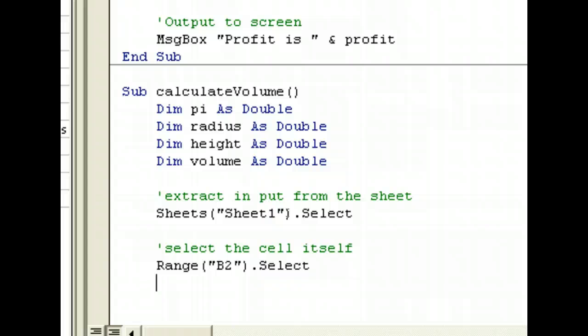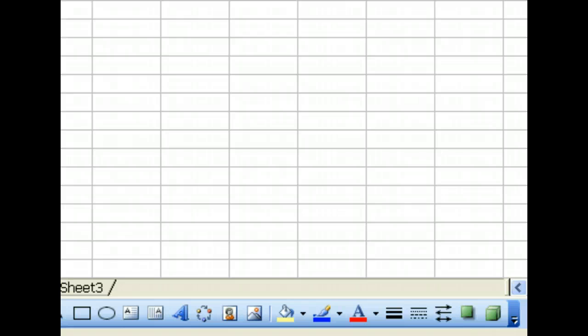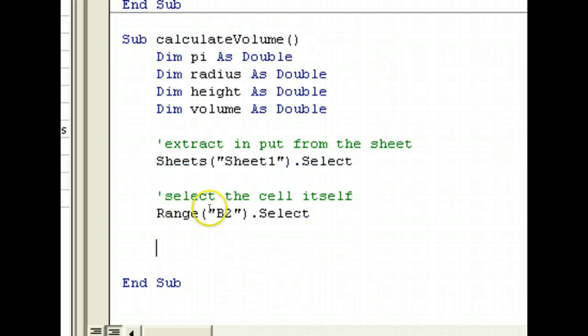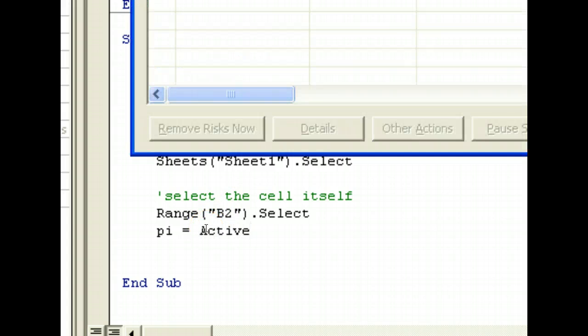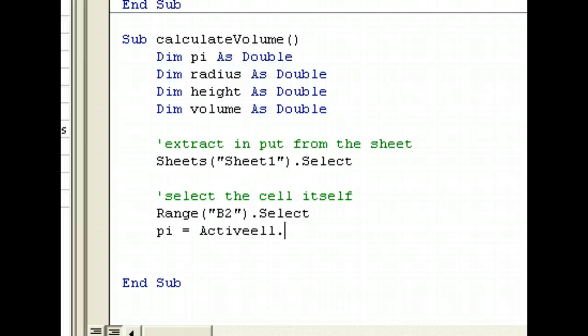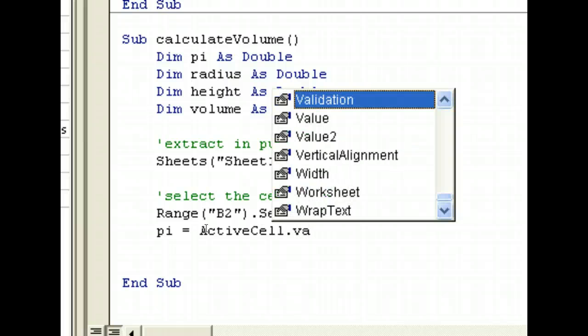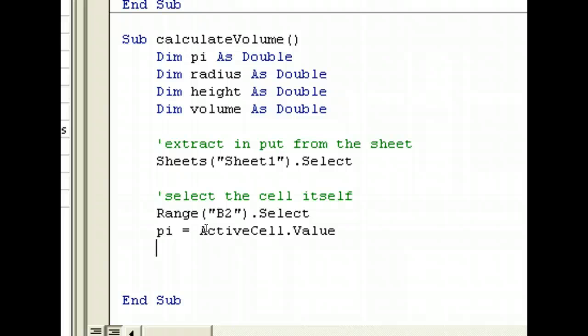So, what we do now is we know that in B2 the value contains the value of pi. So, we want to have the value in B2 to be assigned to pi. So, what we do is we take pi equals to. Now, we extract the active cell. Now, the active cell is already selected in Sheet1 and in B2. So, we take ActiveCell. ActiveCell.Value, which will give us the value of pi.